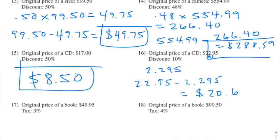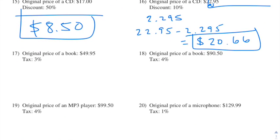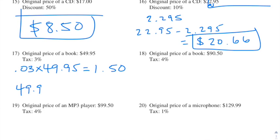Number seventeen: tax is the same as markup — we take a percentage of the original price and add it. The tax rate is 3%, so we do 0.03 times $49.95 and we end up getting about $1.50. We take $49.95 and add $1.50 and we end up getting $51.45.